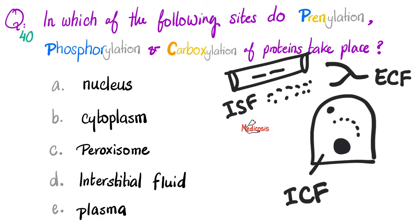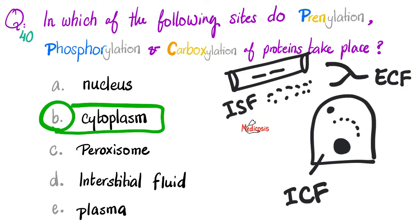At which site do these processes take place? Prenylation, phosphorylation, carboxylation, hydroxylation, glycosylation — all of these are examples of post-translational modification of proteins, which take place once the proteins have left the nucleus and went to the cytoplasm via the nuclear pores.